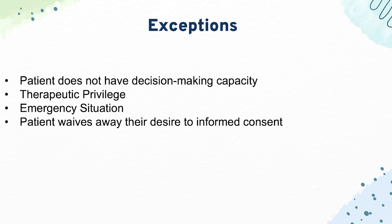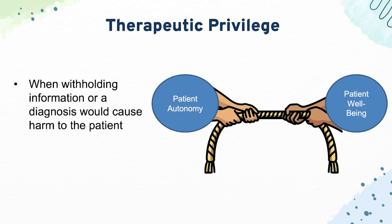The final exception, which is more rare on the step exams, is if the patient waives their right to informed consent — basically saying, I don't need to understand anything, just do what you think is best. Therapeutic privilege is high yield because it balances patient autonomy against beneficence, or acting in the patient's best interest. When you get questions on therapeutic privilege, balance both and consider that if giving information to the patient would worsen their condition — maybe they might start to spiral — then you wouldn't want to do that.